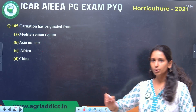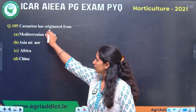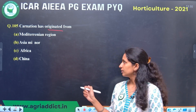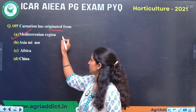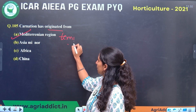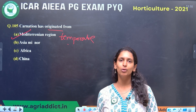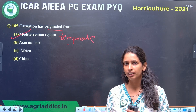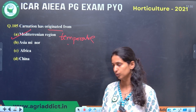Next question: Carnation has originated from the Mediterranean region. It has a temperate type of climate. So in India, Carnation can only grow in temperate environments such as Himachal Pradesh or the high hills of Tamil Nadu.